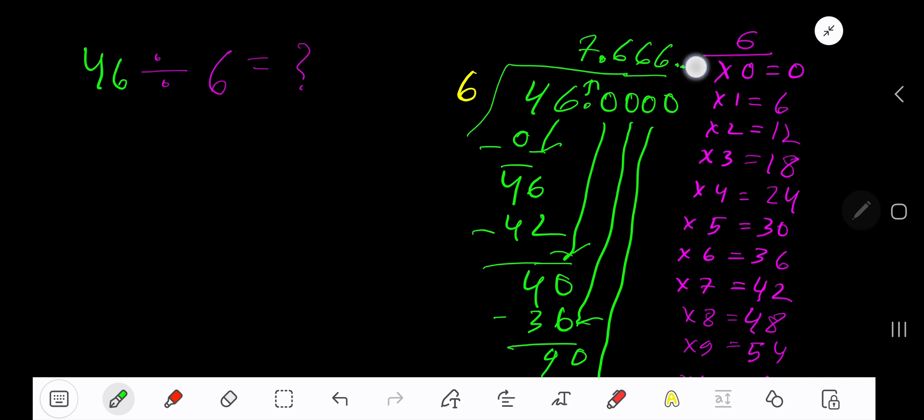So our answer is 7.666 dot dot dot. If you want to write your answer in another form, then you need to place a bar over 6. 7.6 bar is the another form of writing the answer.